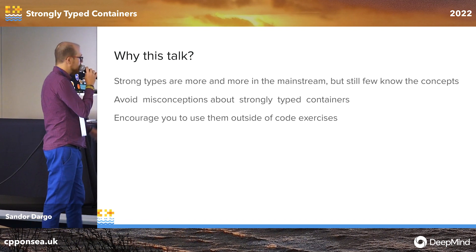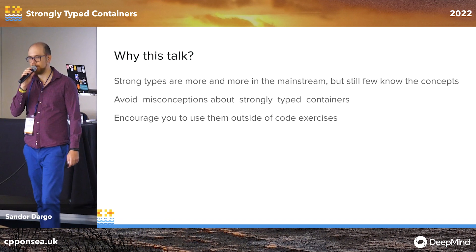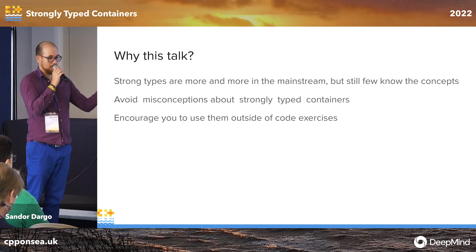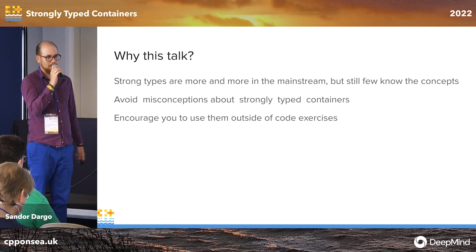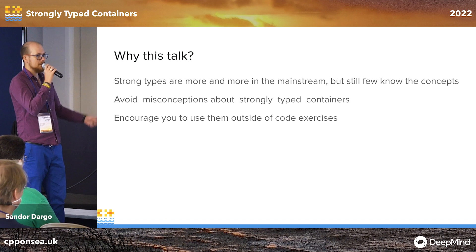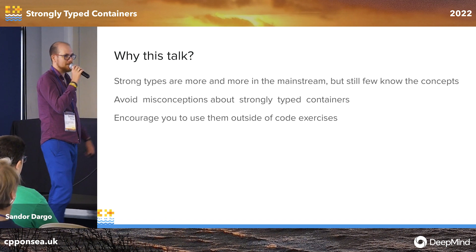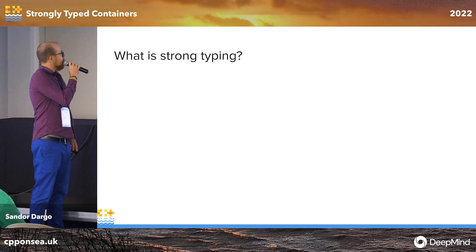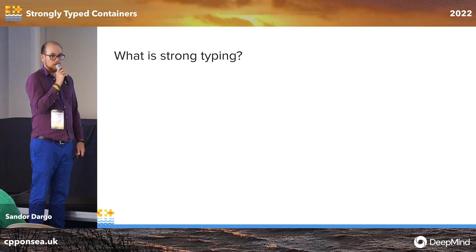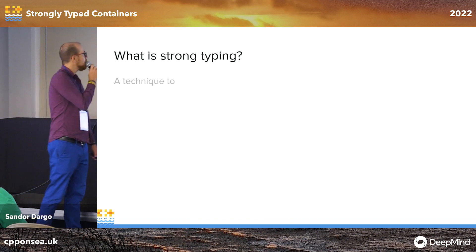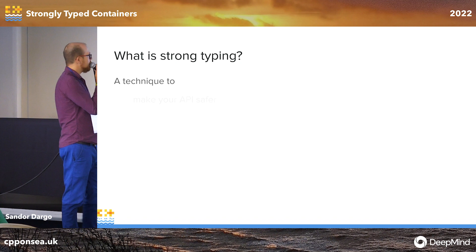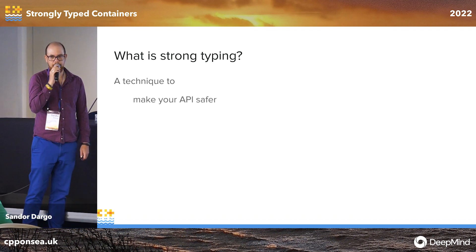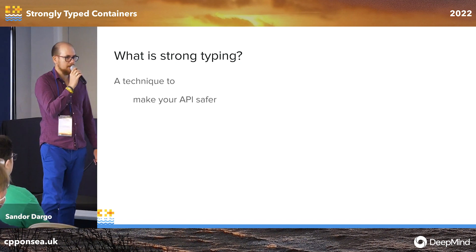I want to avoid misconceptions about strong typing, and especially about strongly typed containers. I want to encourage you to use them — not only in code exercises where it's mentioned you cannot use primitive types. Although a std::vector is not a primitive type, you might consider it one because it's just coming from the standard library. So, what is strong typing? It's a very nice technique to make your API safer.